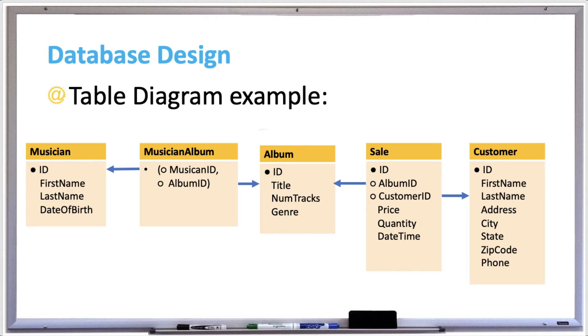In this table diagram, the rectangles, again, are the tables with the table names on the top, and the columns are the text within the rectangles and below the column names. And you'll see that in the musician, album, sale, and customer table, we added an ID column. So each of these tables now has a unique identifier associated for each row.